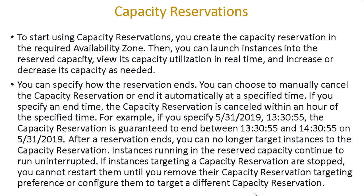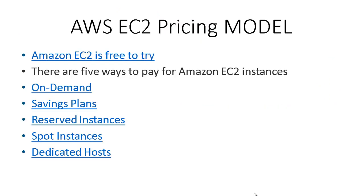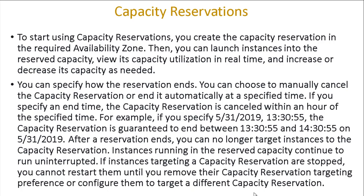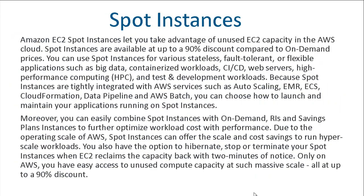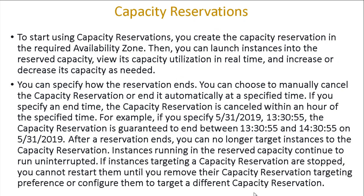Next and lastly, there is Capacity Reservation. We covered On-Demand, Savings Plans, Reserved Instances, and Spot Instances — and lastly there is Capacity Reservation, which is the new thing I mentioned earlier. It is somewhat similar to Reserved Instances. To start using Capacity Reservation, you create the capacity reservation in the required availability zone, then you can launch instances into the reserved capacity, view its capacity utilization in real time, and increase or decrease capacity as needed.